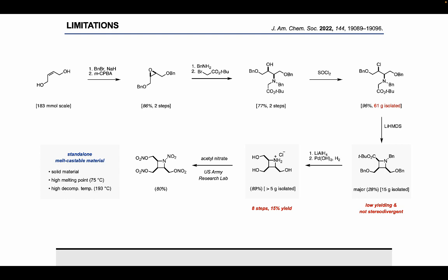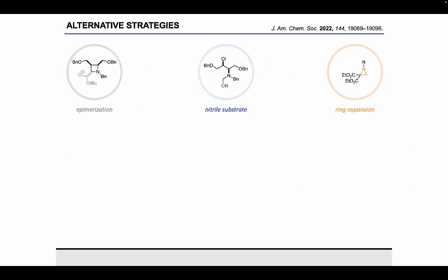It took roughly 60 grams of the amino chloride just to access enough of the one diastereomer. So it was quite low yielding and not stereodivergent. Overall, it took eight steps and 15% overall yield to access this tri-alcohol product. We wanted to consider other synthetic strategies. I won't talk in great detail about all of these strategies, but we did look at epimerizing that all-cis azetidine to the other diastereomer. We additionally looked at this nitrile substrate, which performed much better in the cyclization as far as yield and diastereoselectivity, but that nitrile just couldn't be converted to something useful to us as a nitration precursor. Finally, we looked at a very different approach in which we attempted to ring-expand these azetidine starting materials. Ultimately, none of these strategies were super successful.